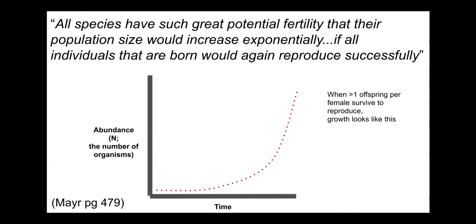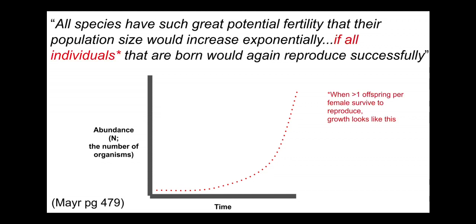Mayr put it this way: 'All species have such great potential fertility that their population size would increase exponentially if all individuals that are born would successfully reproduce.' This is a slight overstatement — it's not 'all individuals,' but rather if more than one individual on average survives. We often think of exponential growth in things that increase rapidly, like weeds, many insects, and viruses or pathogens in a body or population, but even elephants will increase exponentially if they have enough resources.